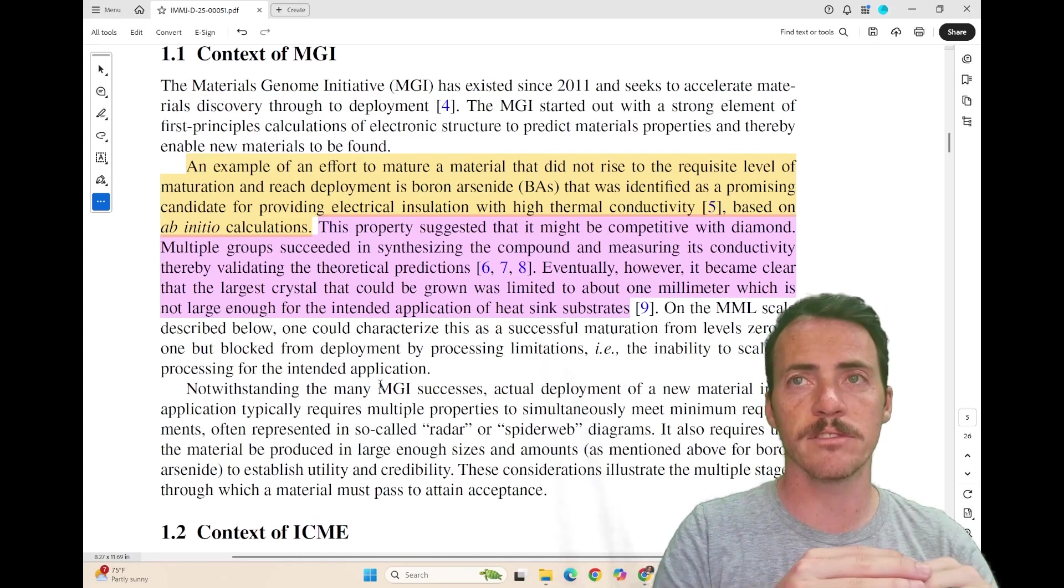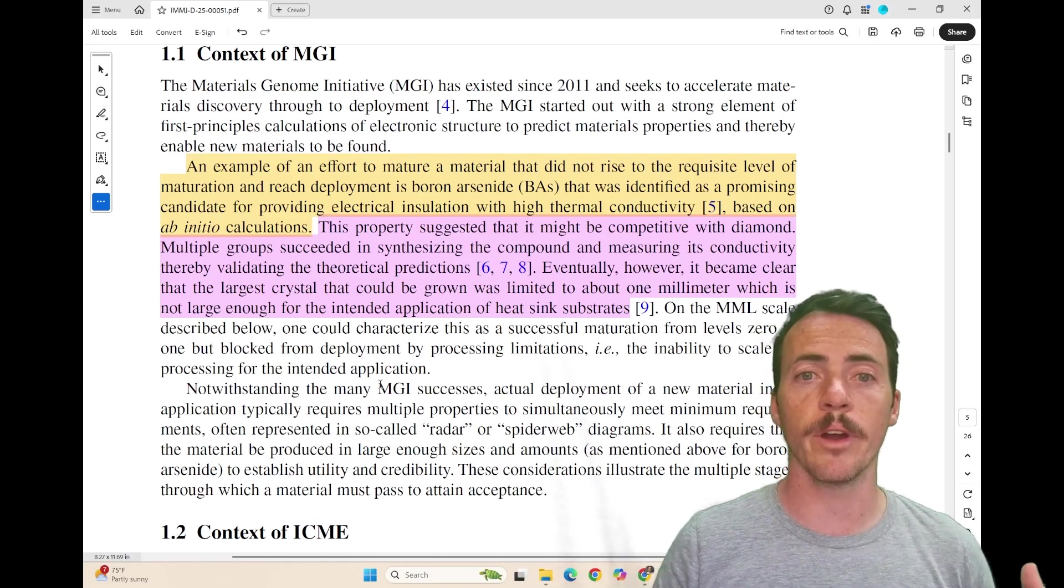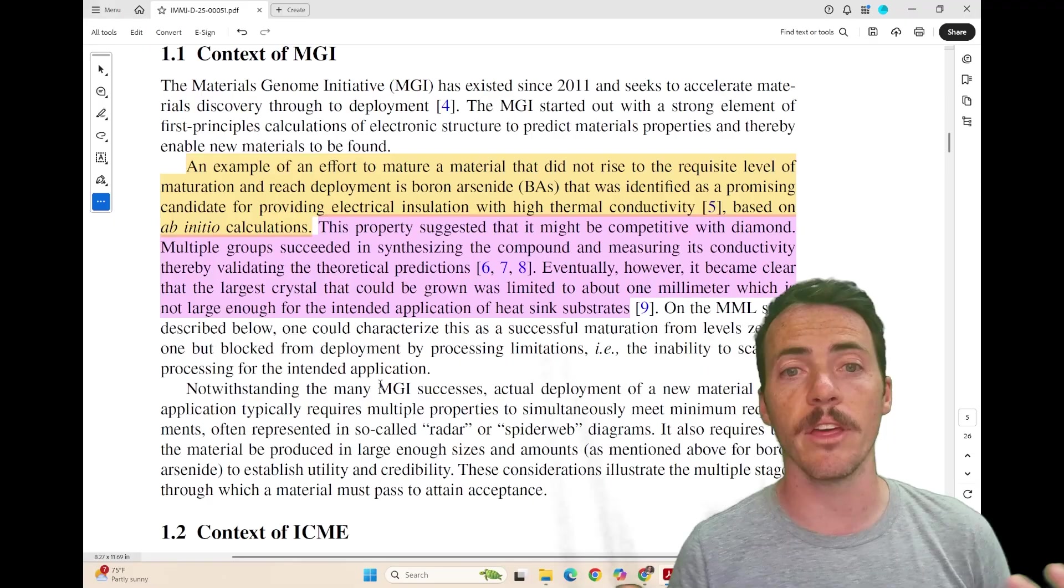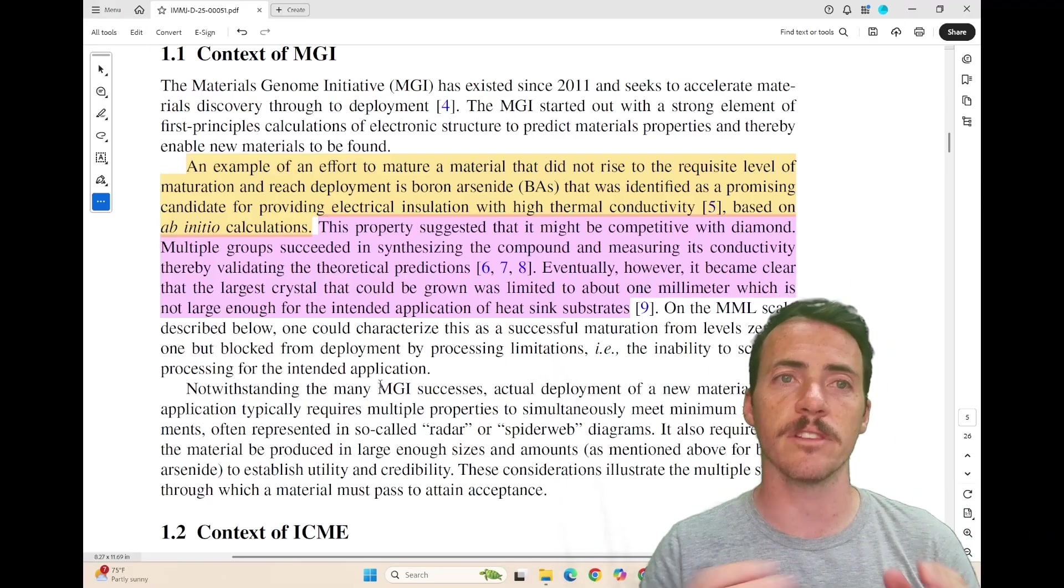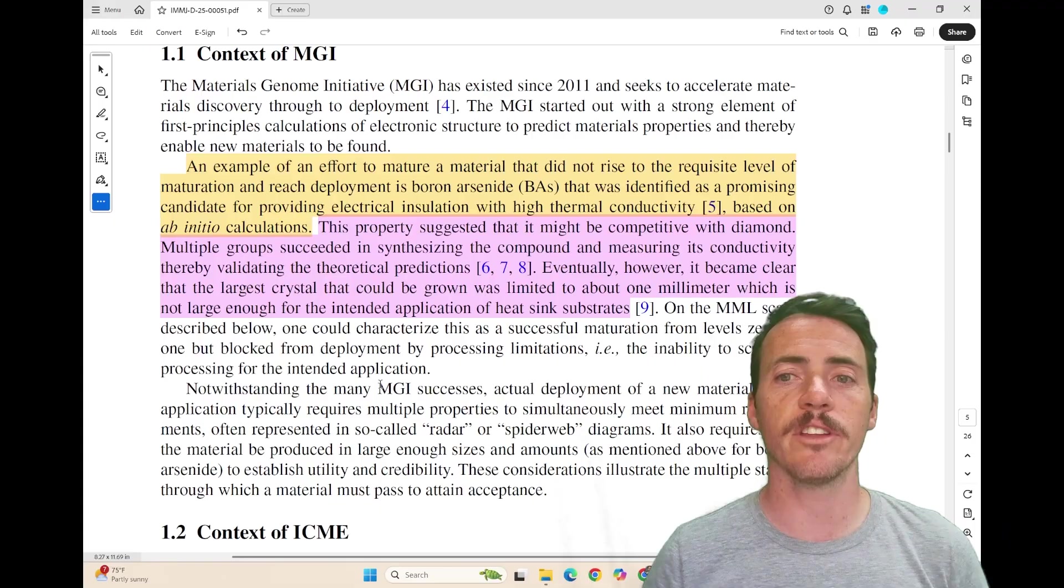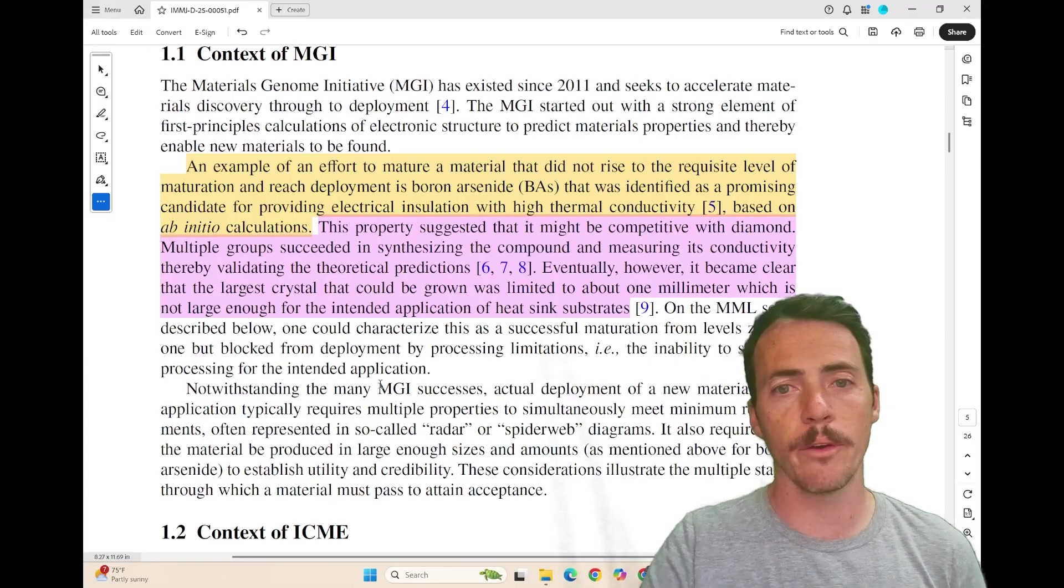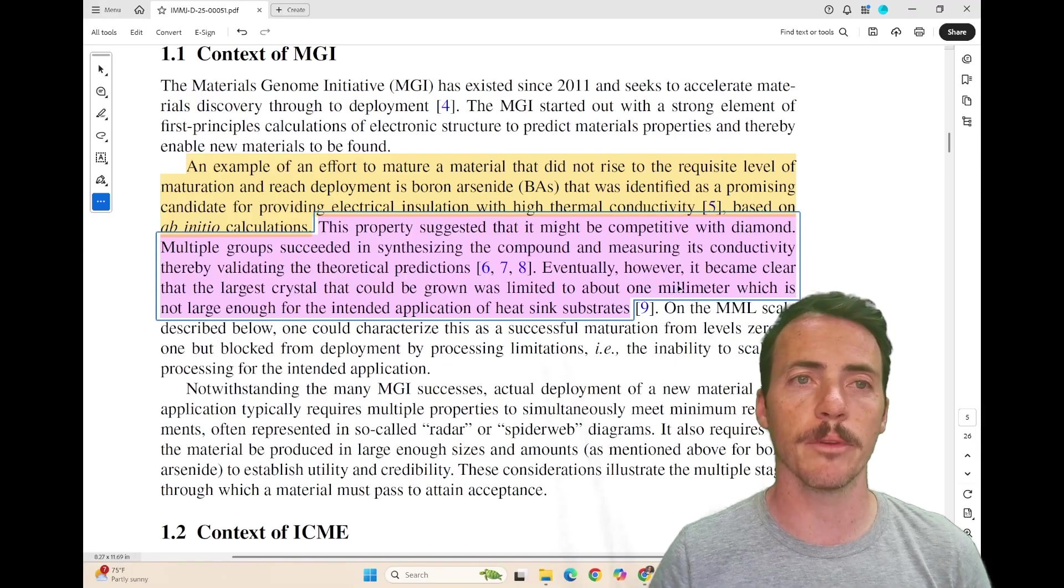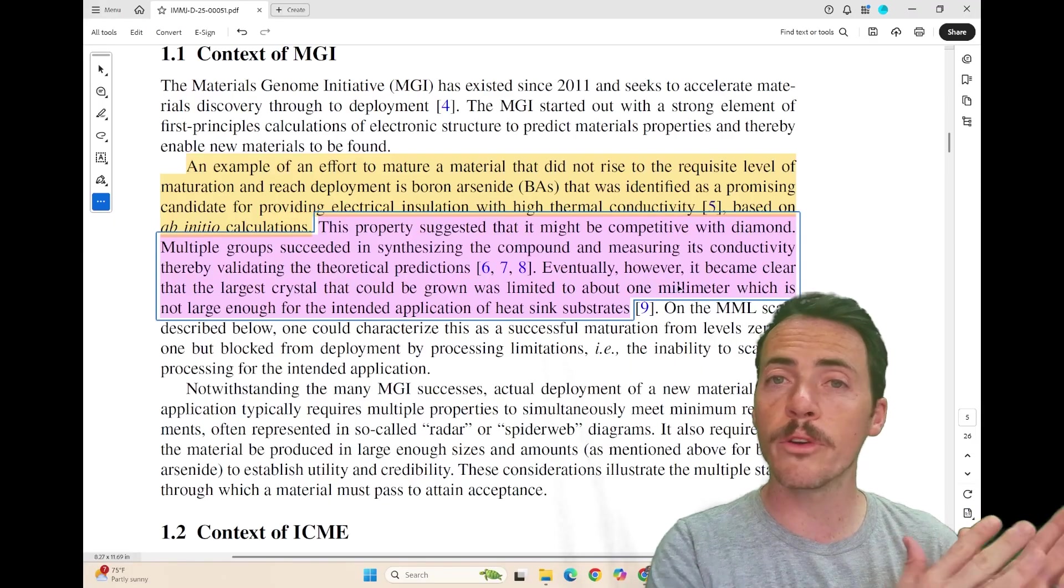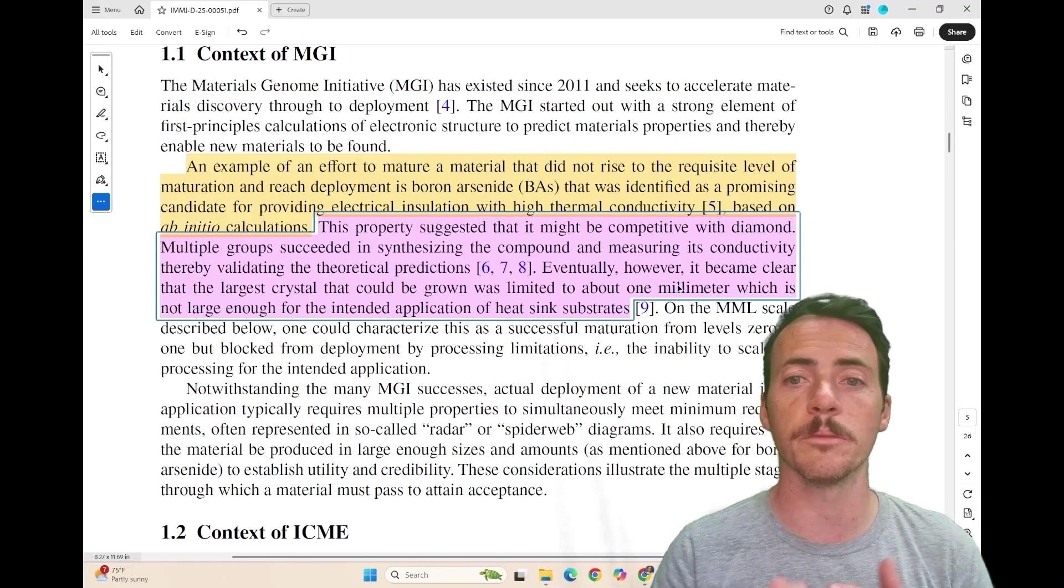It needs to be, the substrate has to be electrically insulating, obviously, but you want it to get the heat out. So this could compete with even diamond, they thought. But when they actually went through the process of developing this and tracking its maturity, eventually found that the largest crystal that they were ever going to be able to grow was basically one millimeter, which was not going to be big enough for heat sinks. So an example, something that was progressing towards maturity level, but ultimately stalled.